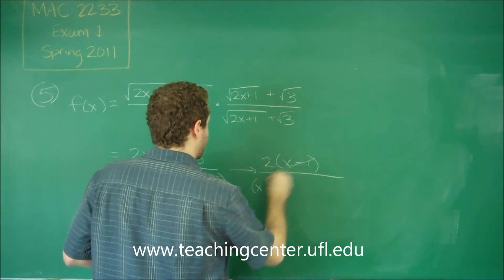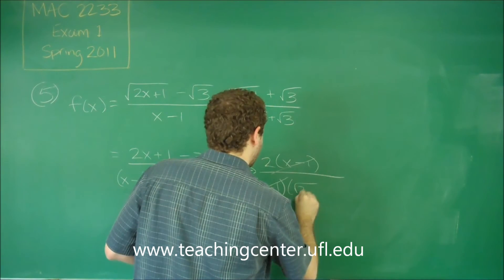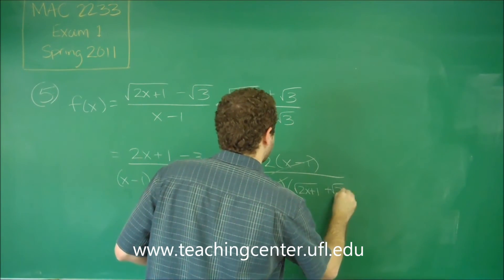The x minus 1 on the bottom is going to cancel out. And we're left with root 2x plus 1 plus root 3.